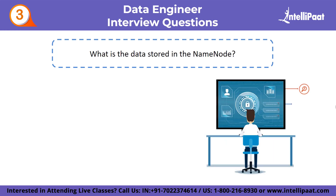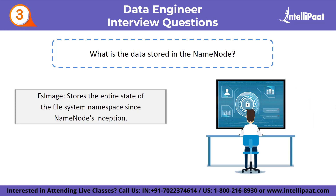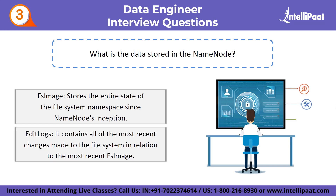Third question: what is the data stored in the name node? The name node stores metadata about all the files in the cluster, such as the location of the block stored, the size of the files, permissions, hierarchy, and so on. The metadata is associated with two files: first, fsimage, which stores the entire state of the file system namespace since the name node's inception; and second, edit logs, which contains all the most recent changes made to the file system in relation to the most recent fsimage.